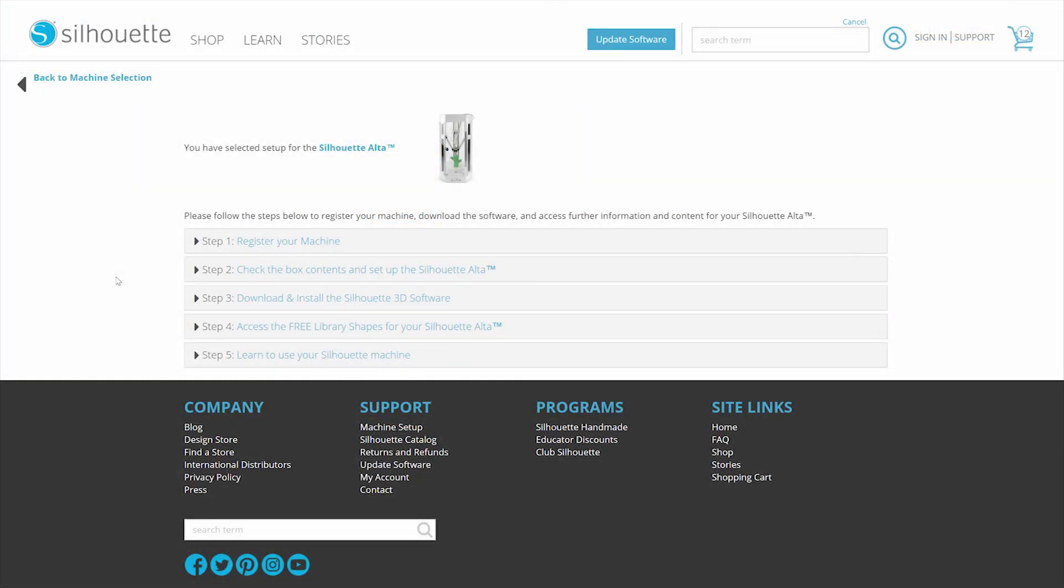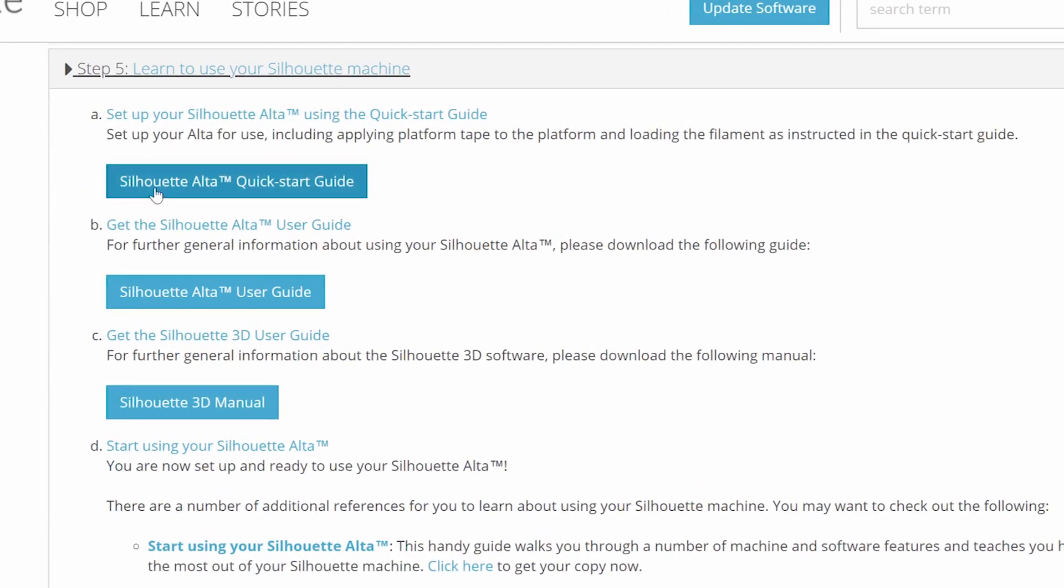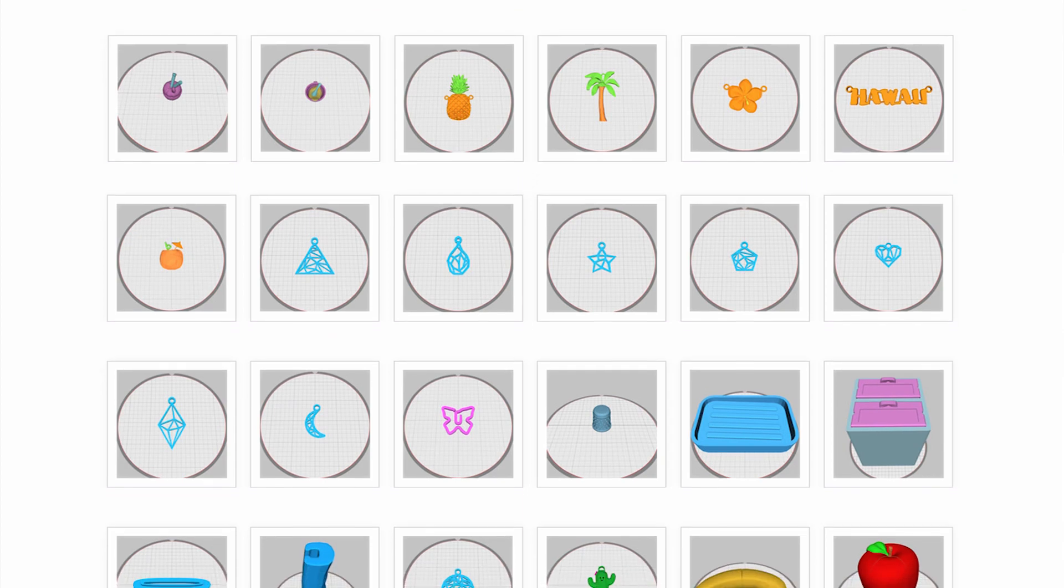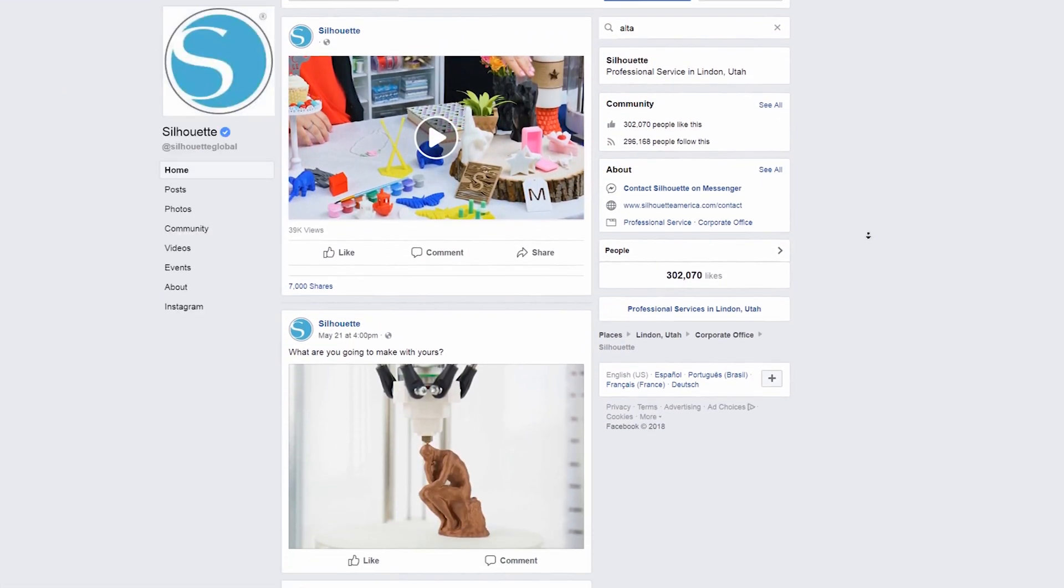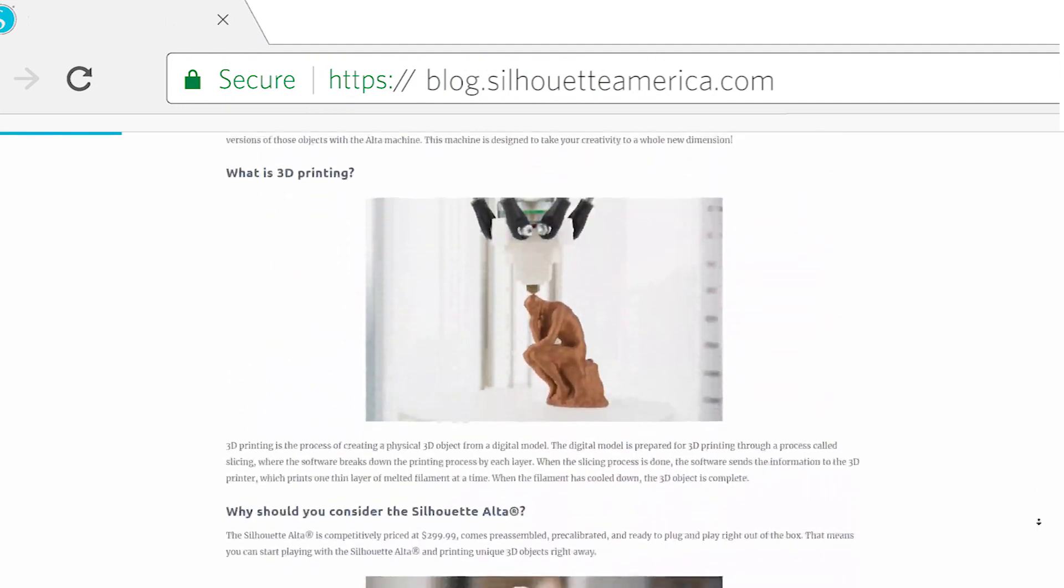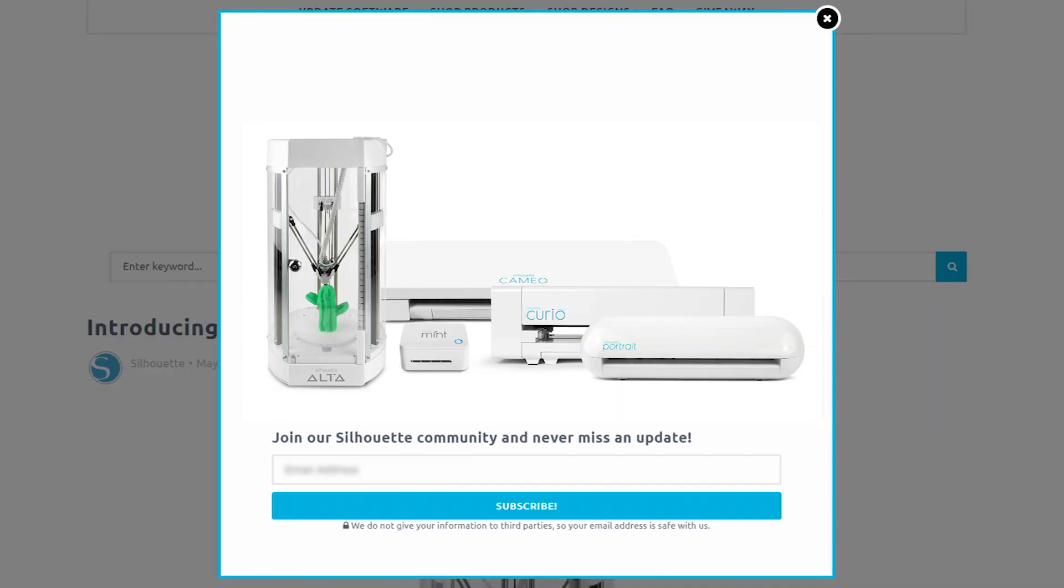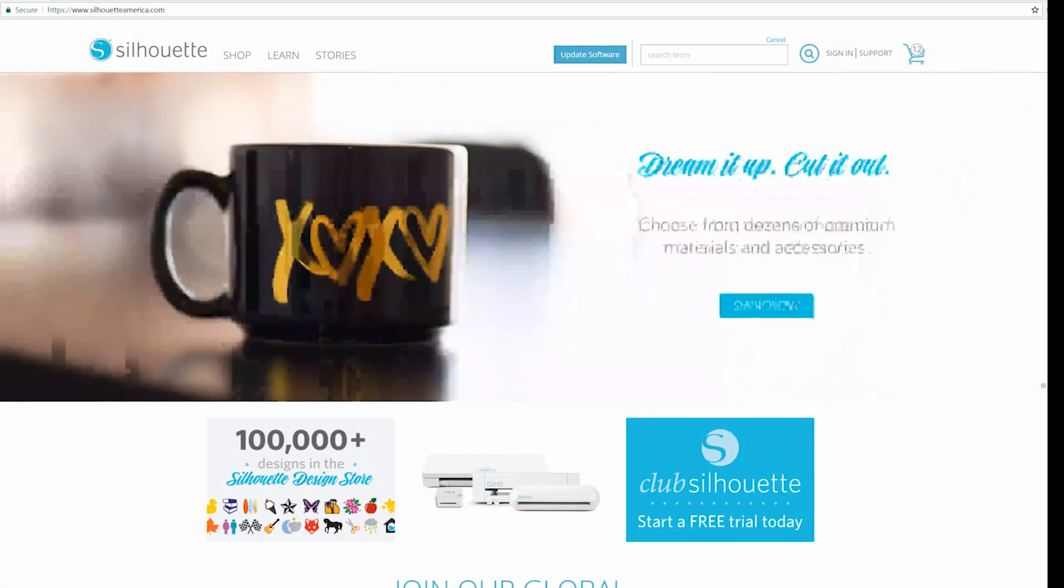Explore the many other options available with the Silhouette Alta and the Silhouette 3D software by consulting the machine and software manuals on the setup page. Find additional designs at the Silhouette Design Store. Find project ideas on our social media channels and our blog at blog.silhouetteamerica.com. Sign up for weekly free designs and the company newsletter, which contains discount codes and sale information. It's all there for you at SilhouetteAmerica.com.